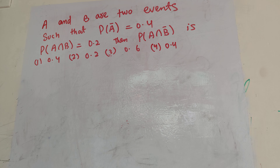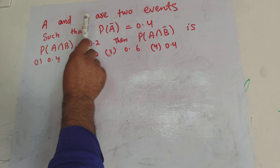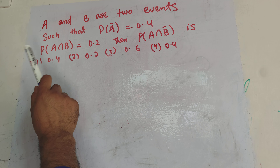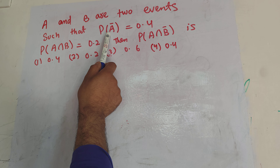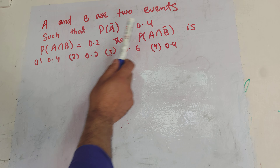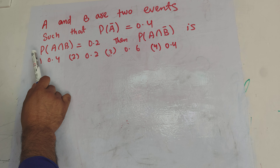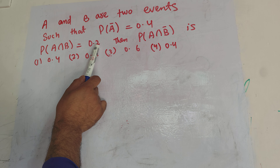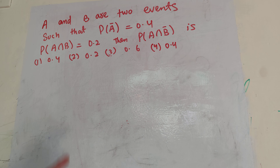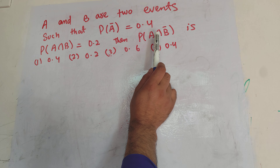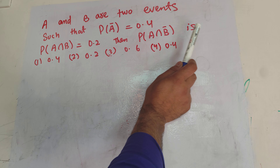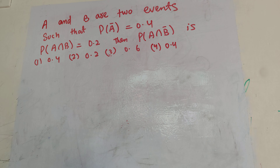Hello, your question on probability. The question is: A and B are two events such that the probability of not happening event A is equal to 0.4, and probability of A intersection B is equal to 0.2. We have to find out the probability of A intersection B naught. Options are being given and we need to find out the correct option.